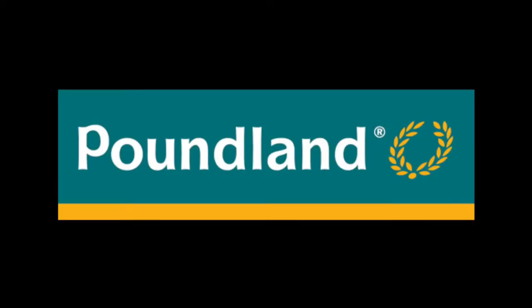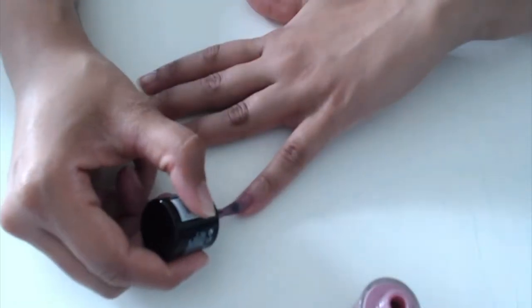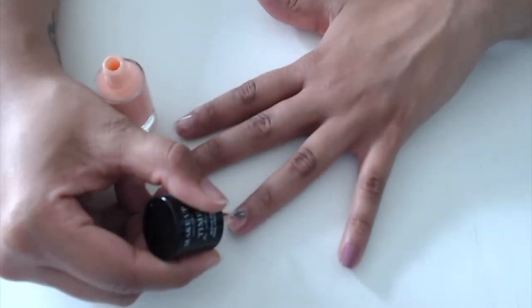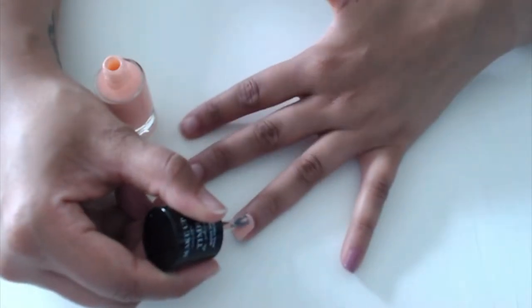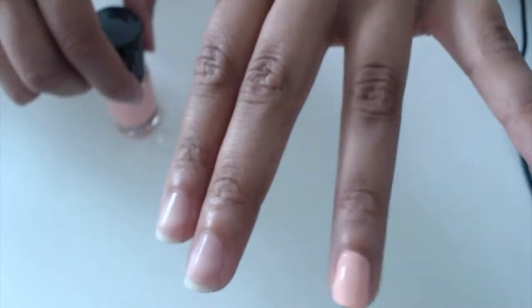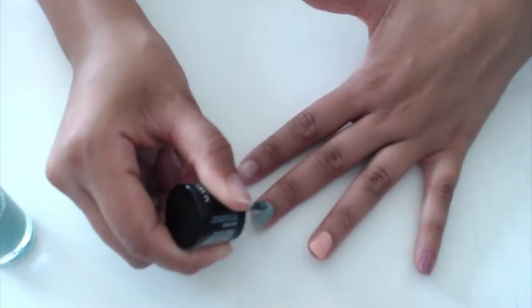So first we're going to start up with Blush Rose, then head on in with Pink Soda for the middle finger. We're going to paint it Periwinkle.